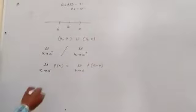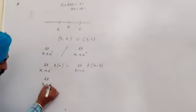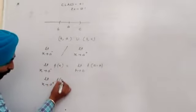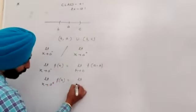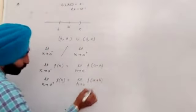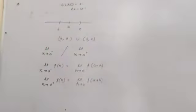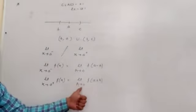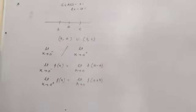Right limit: limit X approaches to A positive f(x) is equal to limit h approaches to zero f of (a plus h). Clear? Limit h approaches to zero f of (a plus h).